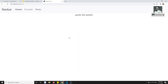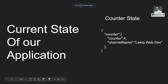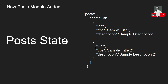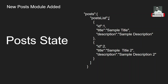Let's see this in the presentation. The current state of our application is the counter state only. The counter state has two properties: counter value and channel name. This is the state our application has right now. Next, we need to add the post state also. The post state will look like this - just like the counter has a counter value, the post state will have a list of posts.